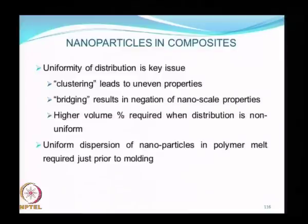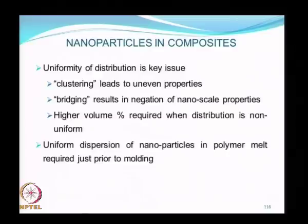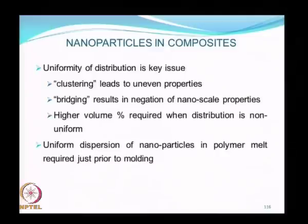One of the main attractions of using nano additives is that for the same volume of material, you can get much greater enhancement when you use it in nano form because of the increased surface area per unit volume. However, if the distribution is not uniform, you lose that advantage and have to increase the volume percent of material used, so the cost advantage is lost. When making nano composite polymers, uniform dispersion in the polymer melt is an absolute requirement and should be done just prior to molding the plastic material.